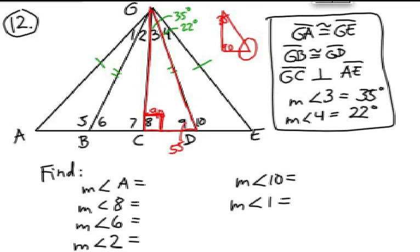Now, angle 9 is the base angle of this larger triangle. Notice the isosceles triangle there. I have two congruent segments, which makes base angle 9 congruent to base angle 6. So, 6 must also be 55 degrees.